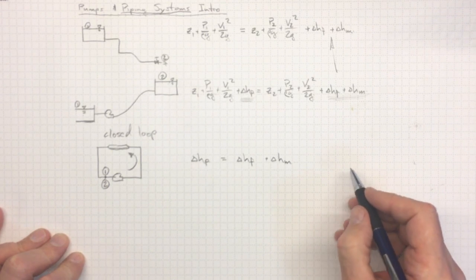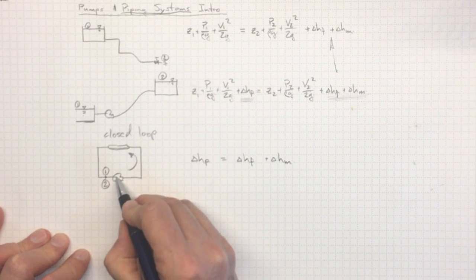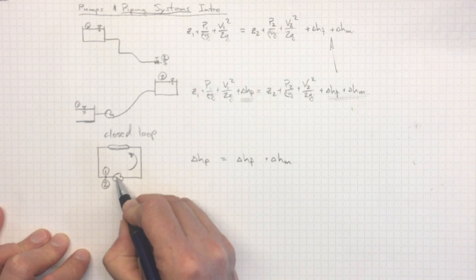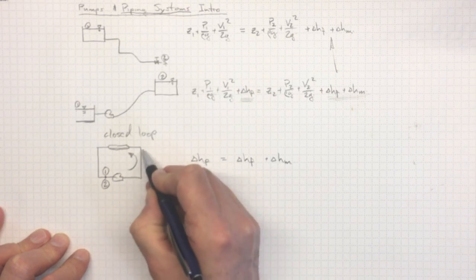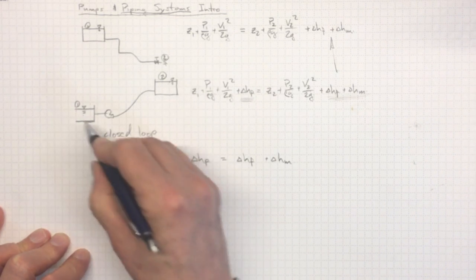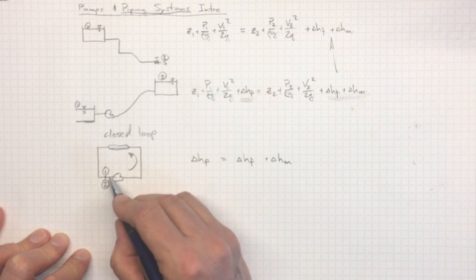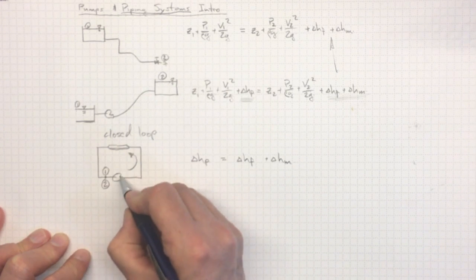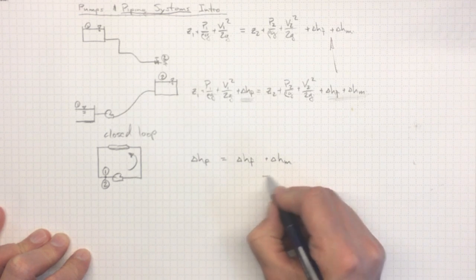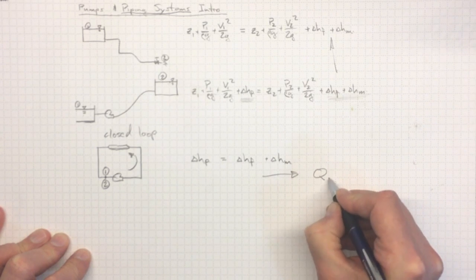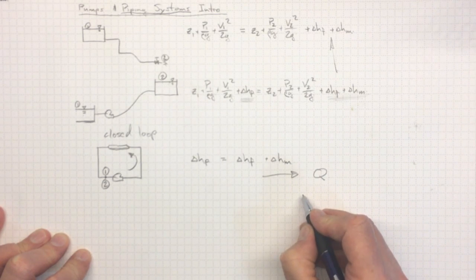What we'd like to be able to do is figure out if we put a given pump in here and have a given length of piping system or a given elevation change in this situation, we'd like to be able to predict how this piping system will interact with this pump to yield a given flow rate. Because until we turn this on, we don't know how much flow we're going to get.